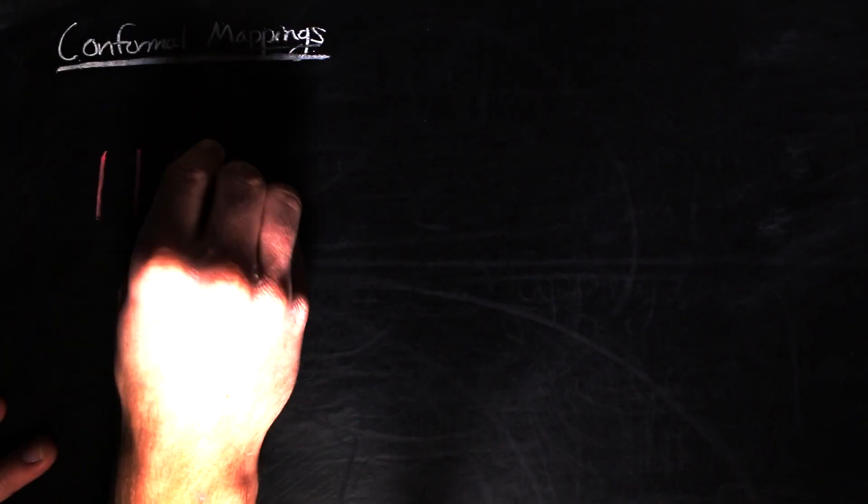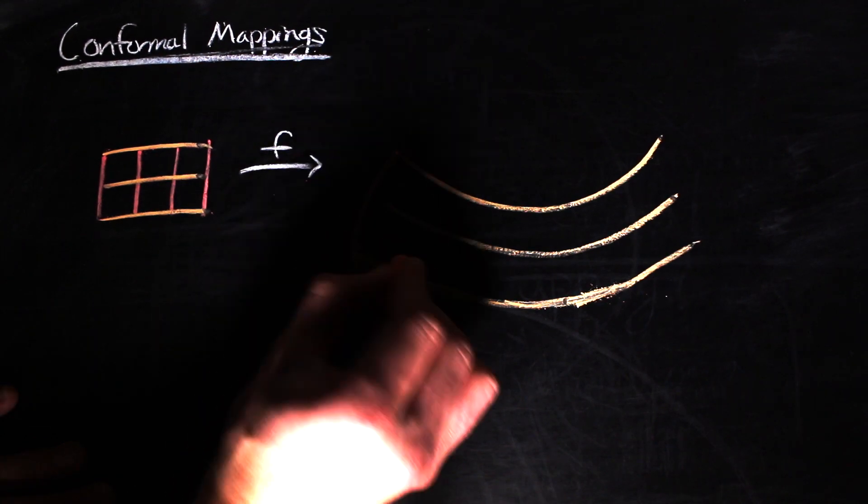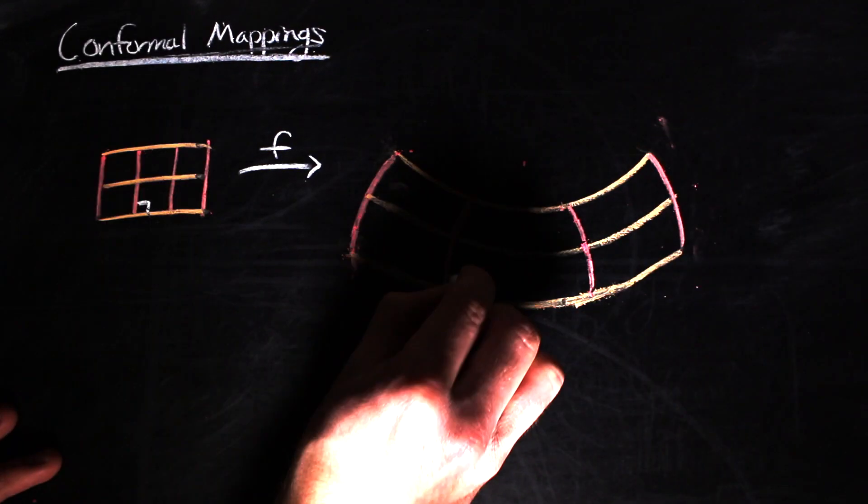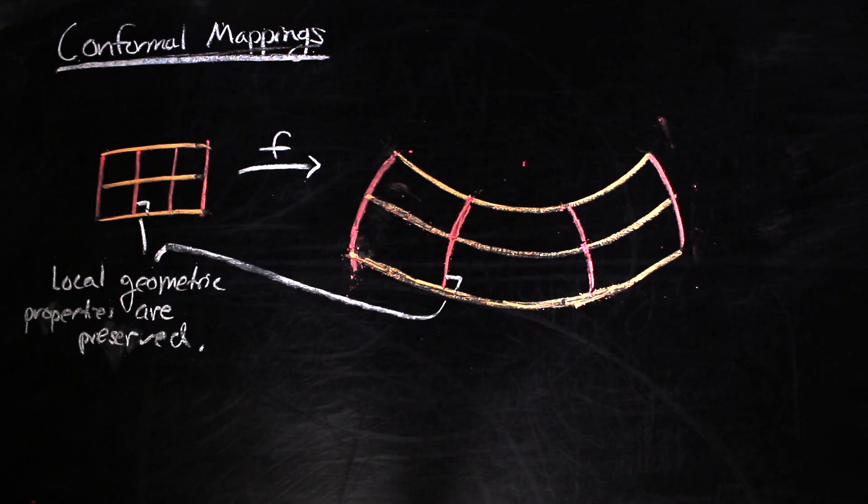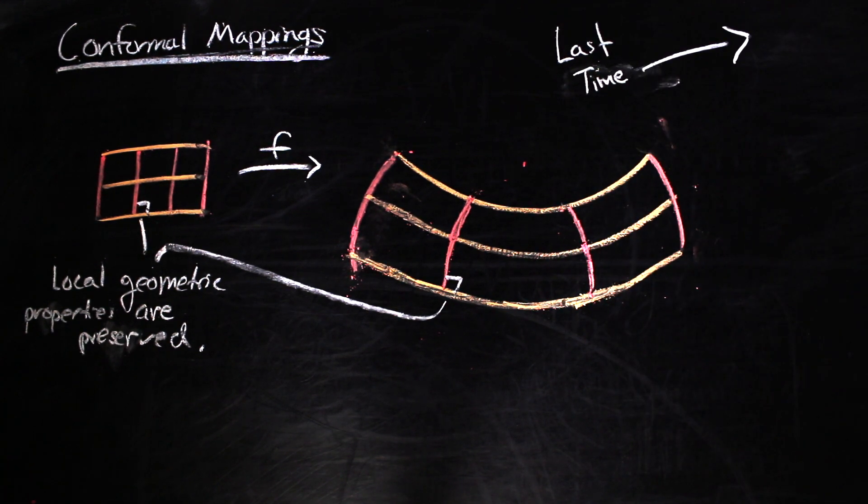Last time we talked about conformal mappings, which in short is a mapping of a region of the complex plane to another region that preserves the geometry on that region locally. If you want a slightly more detailed explanation of these mappings, you can check out the previous video here.